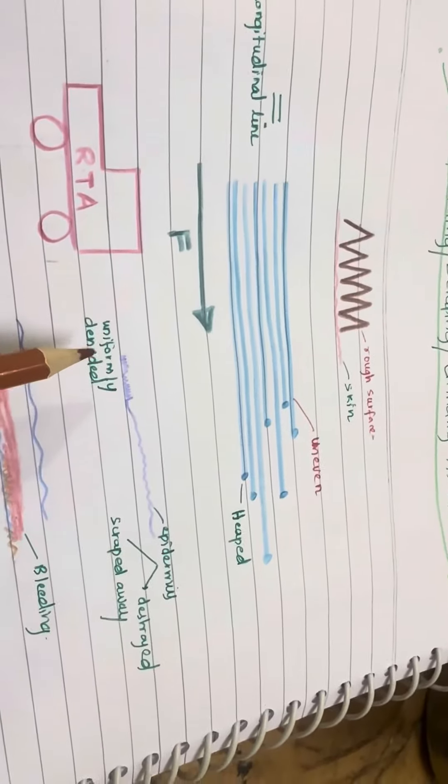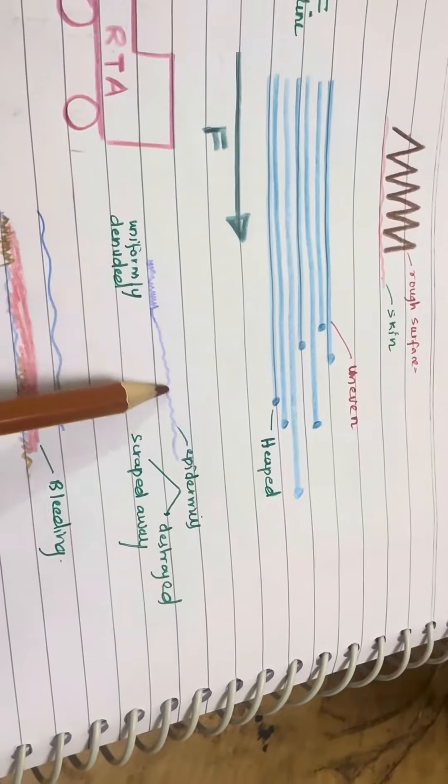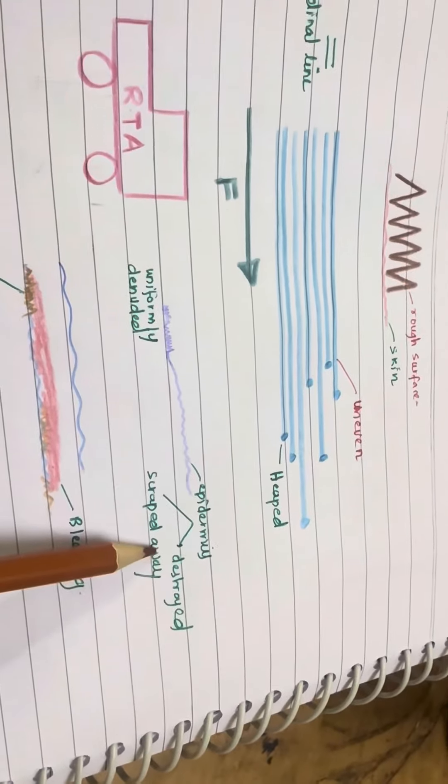The furrow may be... usually the skin is uniformly denuded. Epidermis is scraped away or detached.